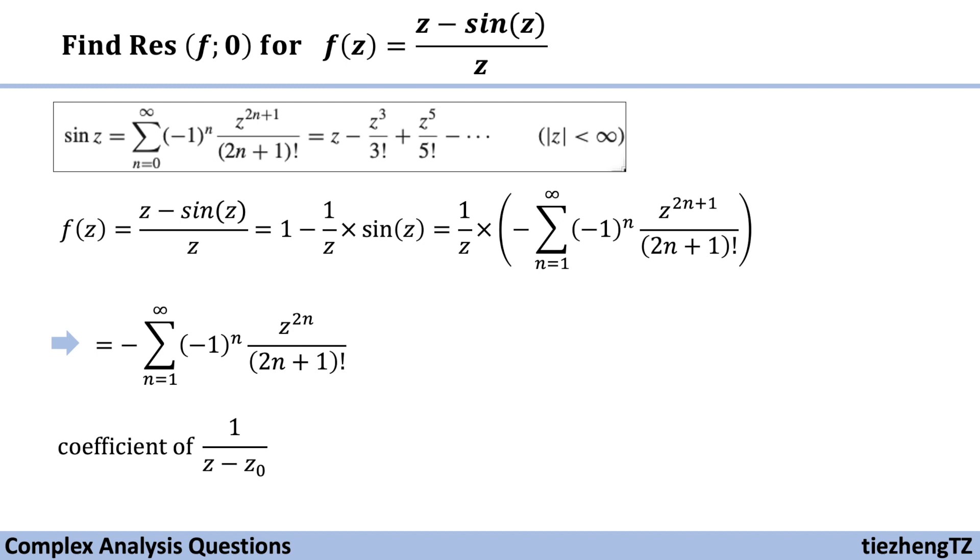So let's take a look at this sum form. And we notice that there is no such n that we can find the form of 1 over z because there is no z in the denominator part. Therefore, the residual for this function when z0 takes 0 is 0.